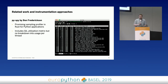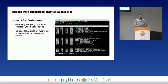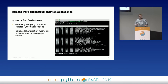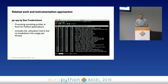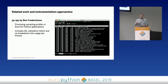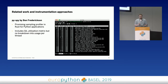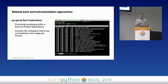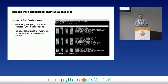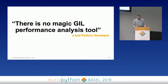A very promising approach is py-spy, a new profiler for Python written in Rust, which is very fast and you can easily attach it to a running application. You get a nice overview about what functions take what amount of time, and it also includes GIL utilization, which is quite nice. But again, you don't have a breakdown to find out what is actually the problem.